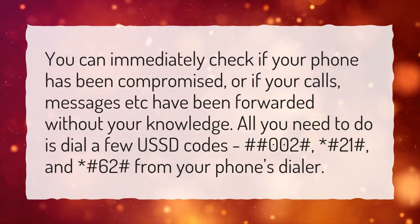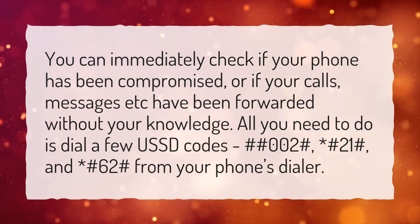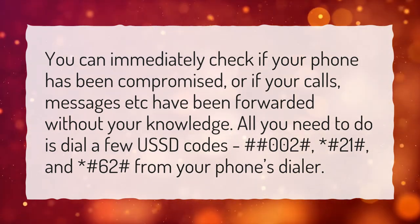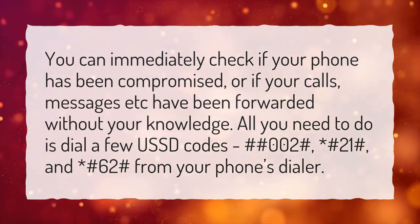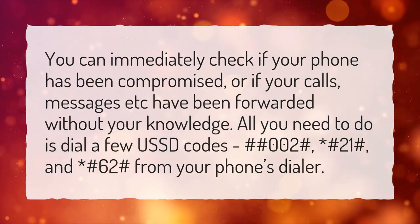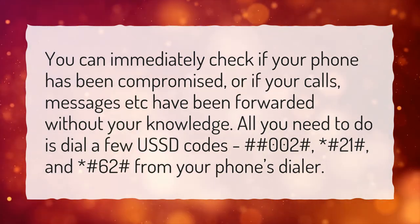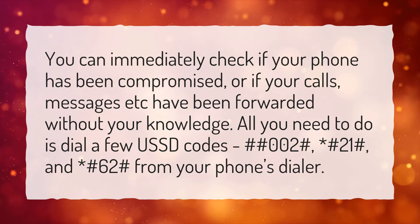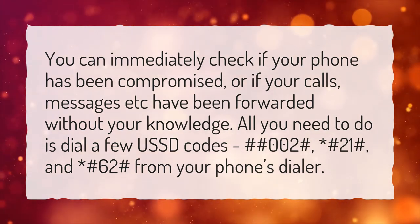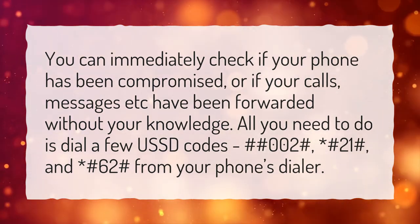You can immediately check if your phone has been compromised, or if your calls, messages, etc. have been forwarded without your knowledge. All you need to do is dial a few USSD codes: hash hash 002 hash, asterisk hash 21 hash, and asterisk hash 62 hash from your phone's dialer.